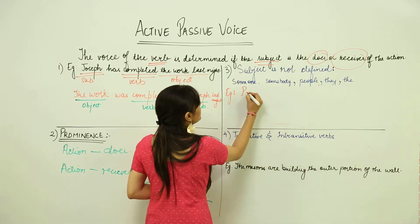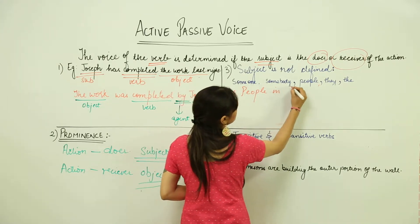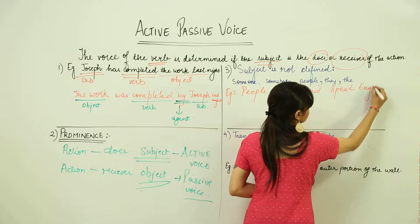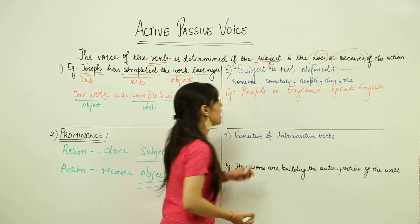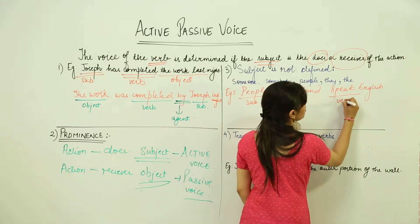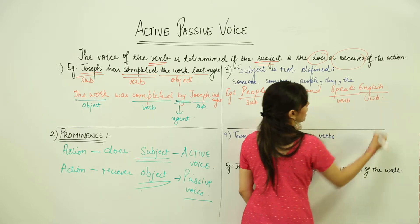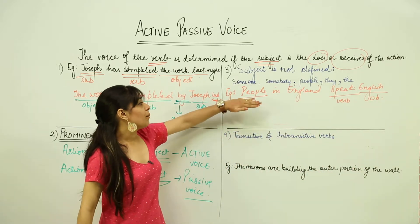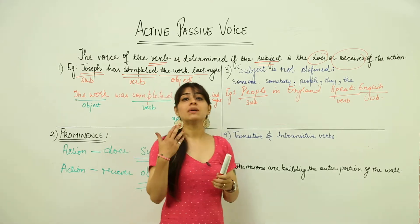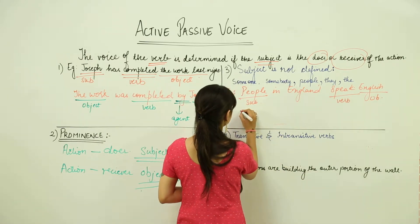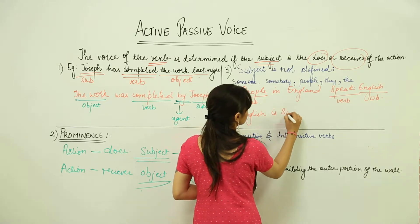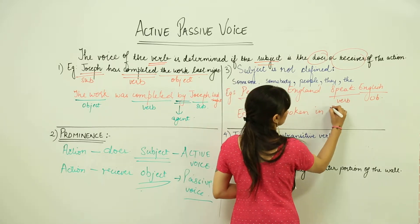For example: 'People in England speak English.' Here people is the subject, speak is the verb, and English is the object. Now people here is not a definite or clearly defined subject. So in this case we tend to use the passive voice: 'English is spoken in England.'